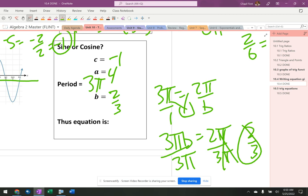So that means the equation is y equals four, whatever function it is, two thirds x minus one. Let's go back here.